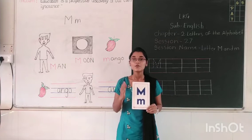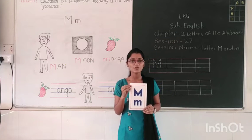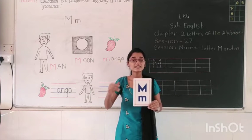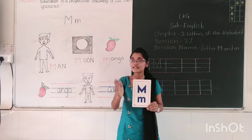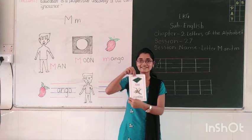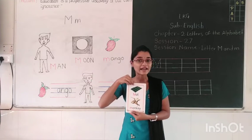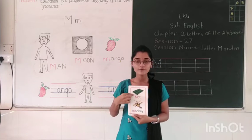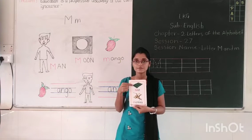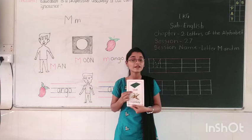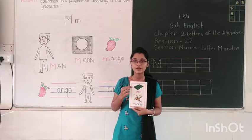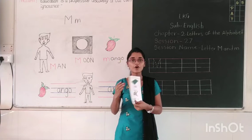Now students, what is the sound of letter M? Do you know? What is the sound of letter M? M says m. And M for what? Look at here. Which picture is this? Mat. This is the picture of mat. So M says m, and M for mat. What is the spelling of mat? M-A-T, mat.